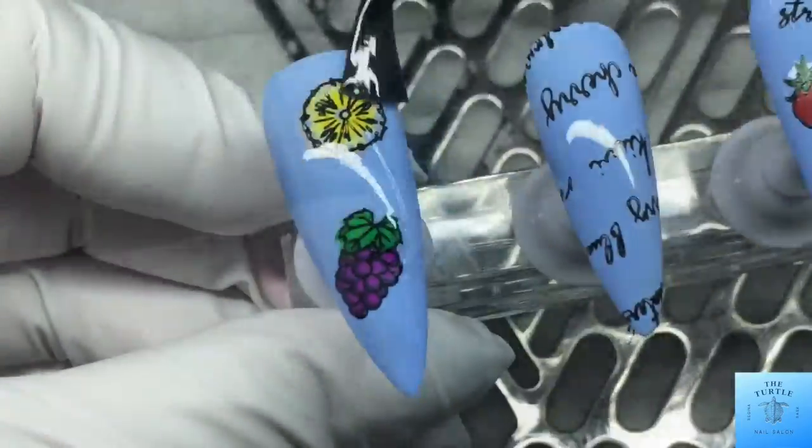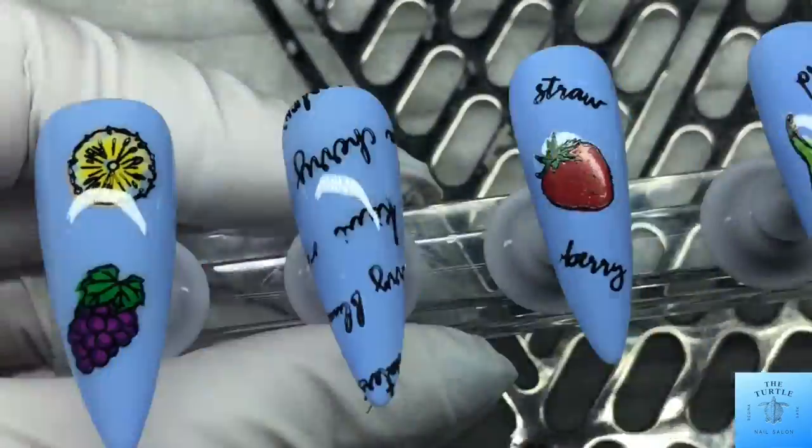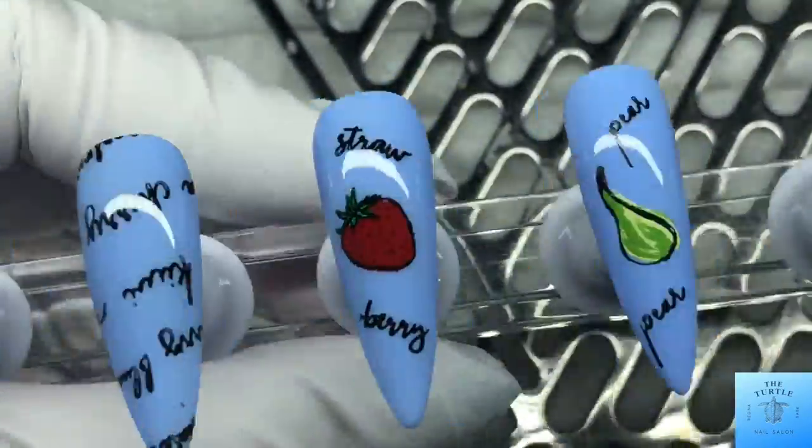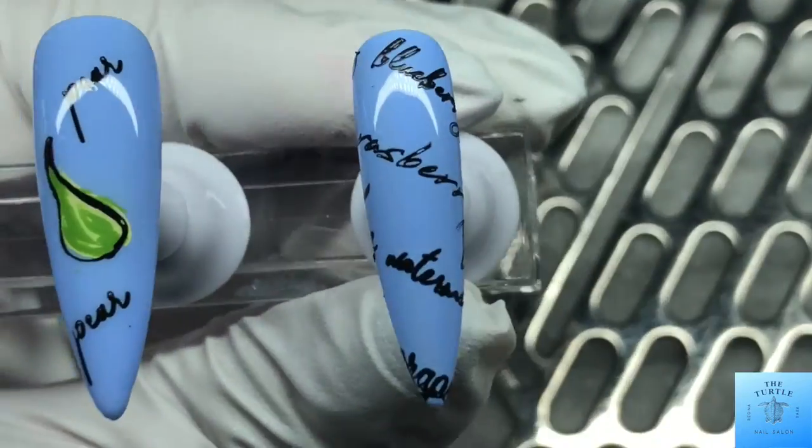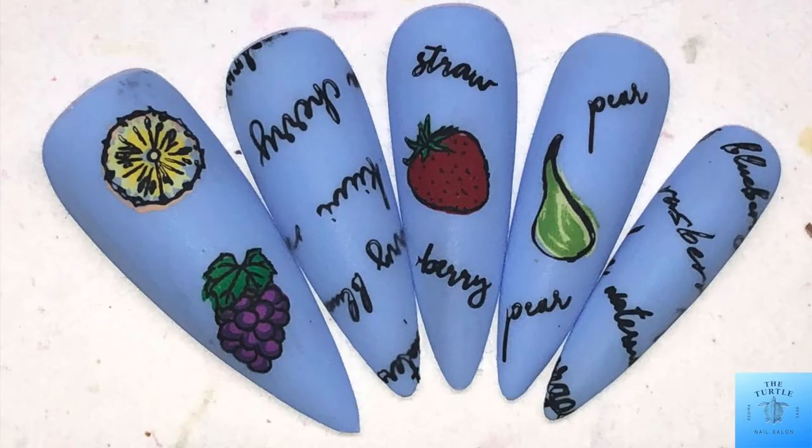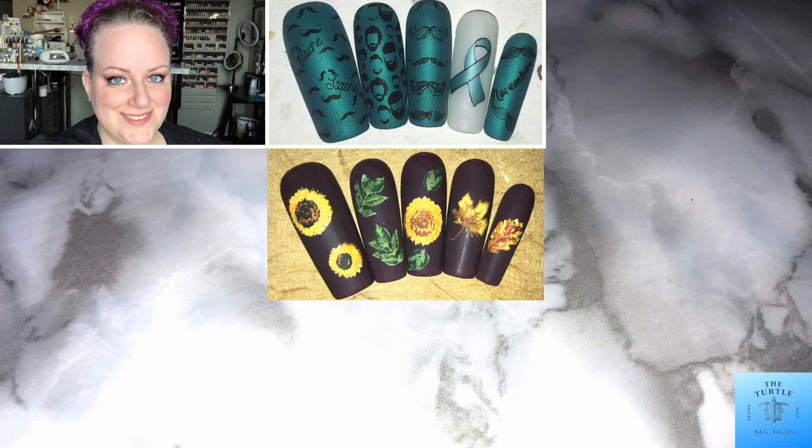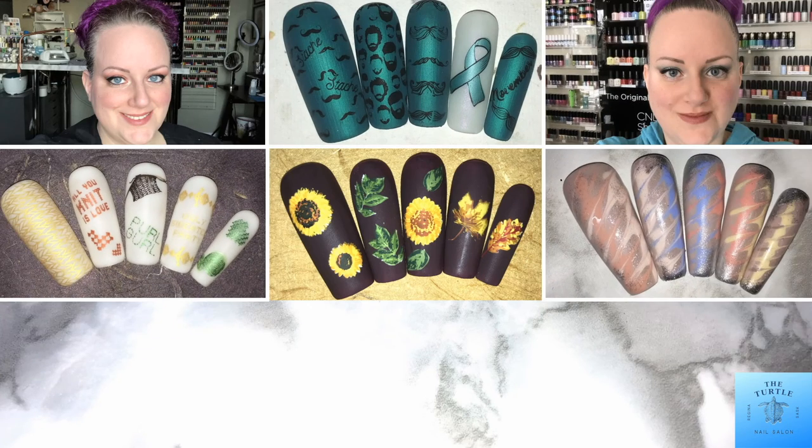Then I'm going to seal in the design with the Be Me Beauty Box Ultra Matte Top Coat, and that is the finished look. So so cute for summer. Thanks for sticking around today and watching my video. Have yourself an awesome day, bye bye.